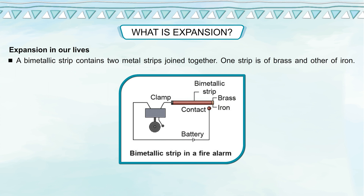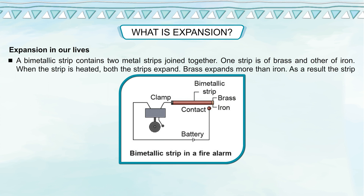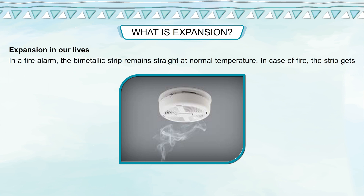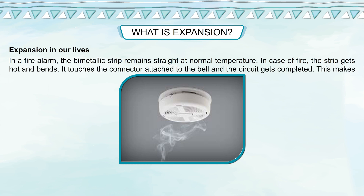A bimetallic strip contains two metal strips joined together — one of brass and another of iron. When the strip is heated, both strips expand, but brass expands more than iron, so the strip bends. A bimetallic strip is used in electrical devices like fire alarms and thermostats. In a fire alarm, the bimetallic strip remains straight at normal temperature. In case of fire, the strip gets hot and bends, touches the connector attached to the bell, completes the circuit, and makes the bell ring.